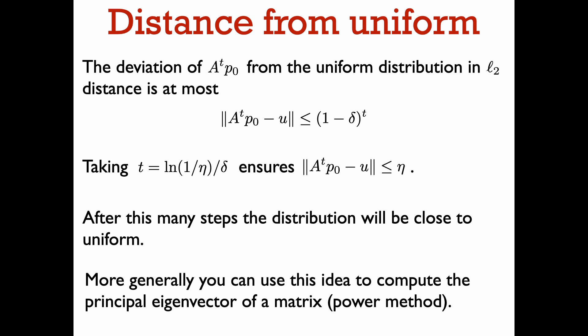To summarize: we have seen that a random walk on a d-regular, connected, and non-bipartite graph converges to the uniform distribution. We can guarantee fast convergence when the graph has a large spectral gap. This should give you some intuition for why randomly choosing where to go at each juncture in a maze, you will eventually find your way out of the maze, if there is a way out.